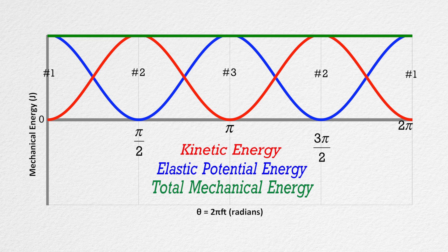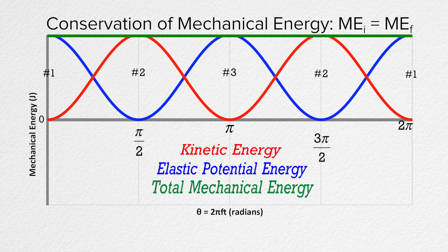Who can tell me what major physics concept the total mechanical energy on this graph illustrates? The total mechanical energy is constant, so mechanical energy is conserved. There is no friction and there is no force applied adding energy to the system via work. So this is conservation of mechanical energy. Simple harmonic motion without friction is conservation of mechanical energy.